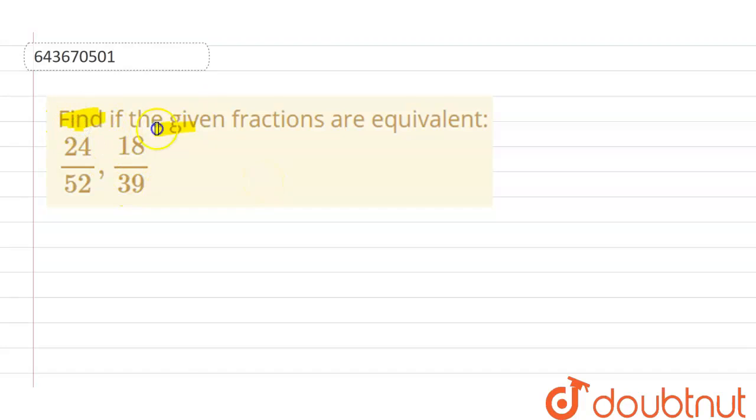We have the question in which we have to find if the given fractions are equivalent: 24 divided by 52, 18 divided by 39. So we need to check that they are equivalent or not. So we can start with the given fractions.